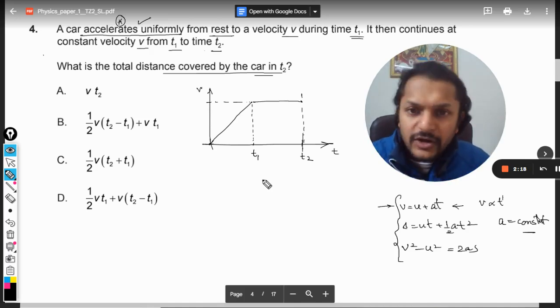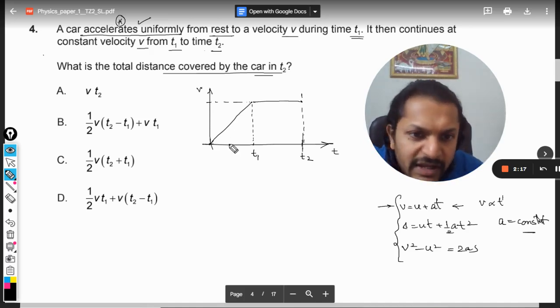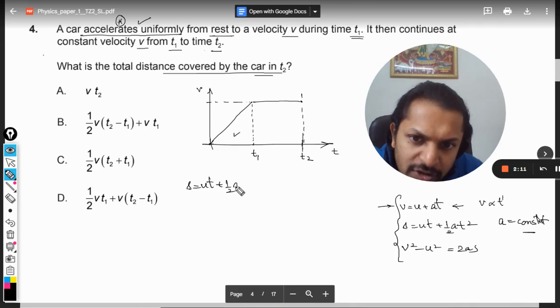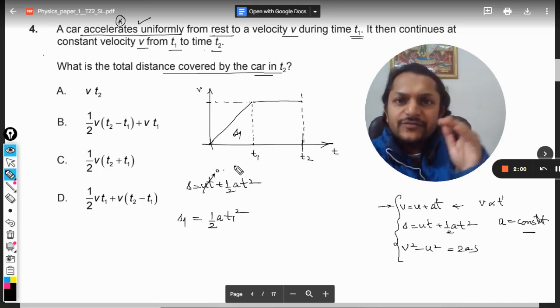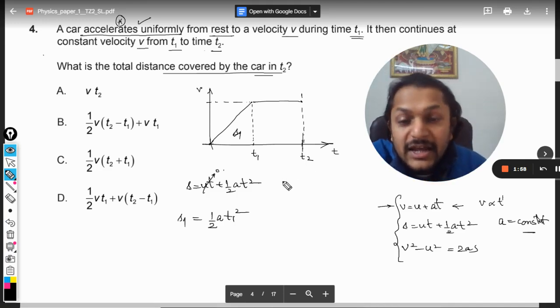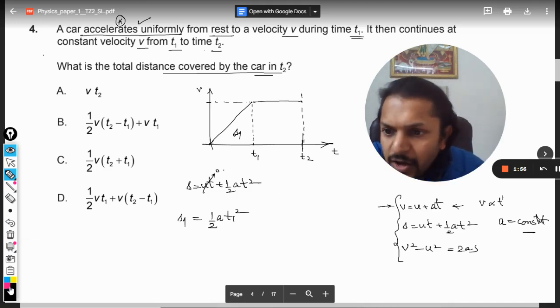So from a graphical point of view, we are going to do all these kinds of things. Otherwise, you can just substitute the values. You need not draw the graph. Now what will be the area? You see, this is uniformly accelerated. I would be using the formula S is equal to UT plus half AT squared. In the first place, U will be taken as 0, so it will be half A t1 squared.